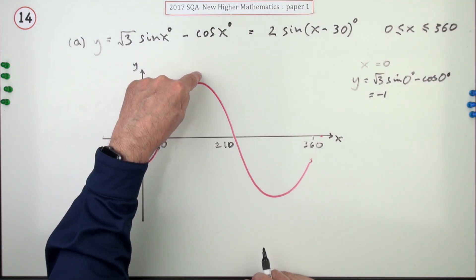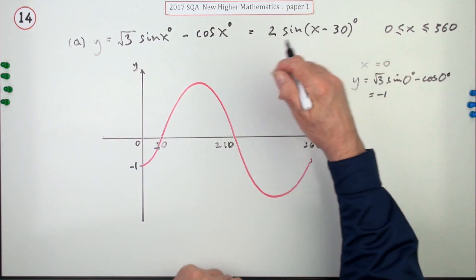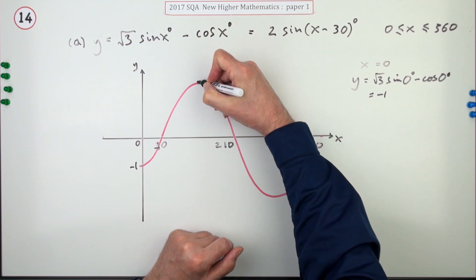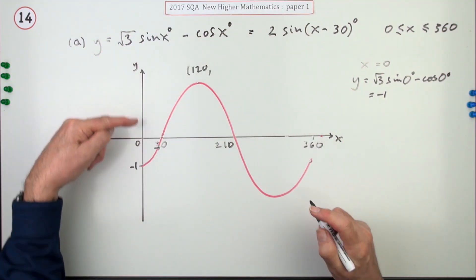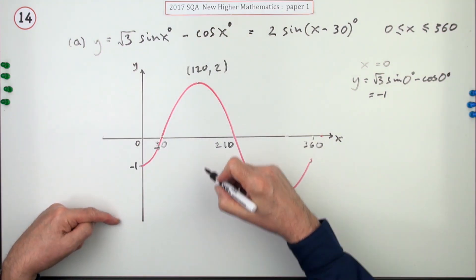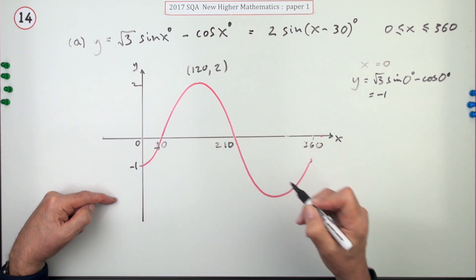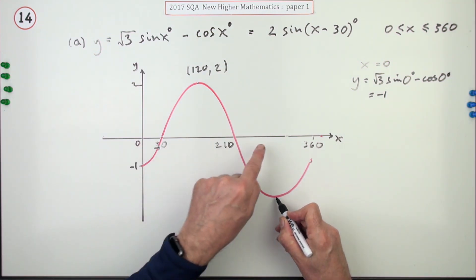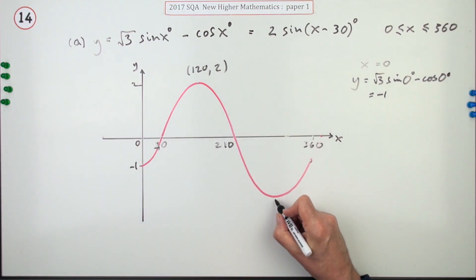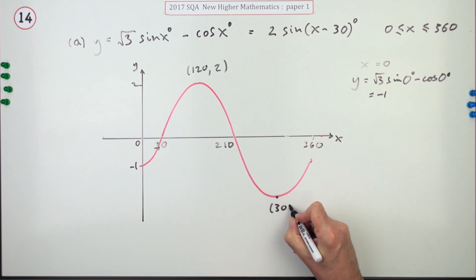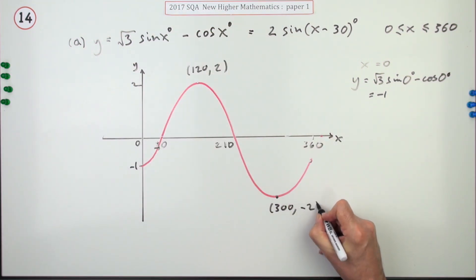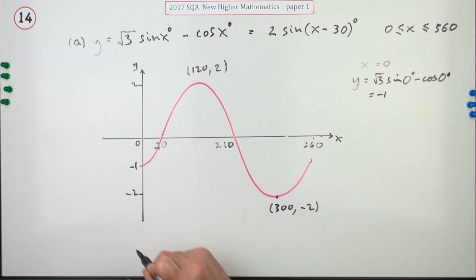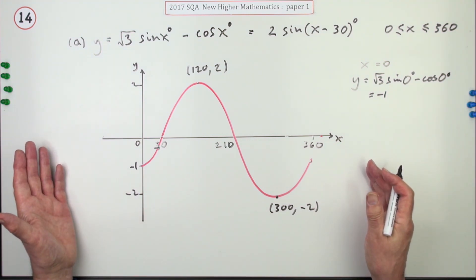The maximum would have been at 90, but shifted forward 30 it's now at 120, with amplitude 2 so y = 2 at that point. The minimum would have been at 270, shifted forward 30 it's now at 300, with y = −2. Mark those turning points clearly on the graph — up 2 at x = 120, and down negative 2 at x = 300.